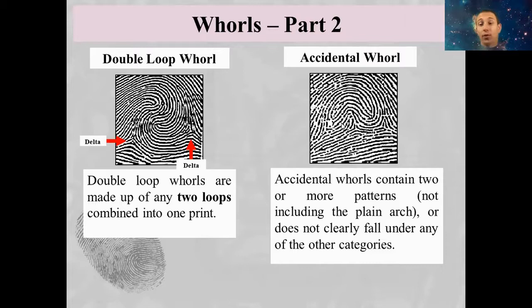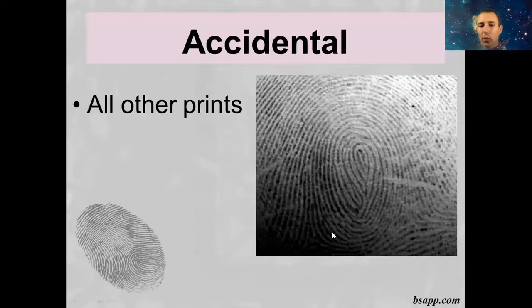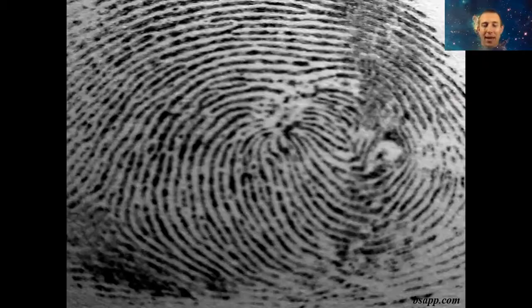If something doesn't fit into any other categories, that's going to be what we call an accidental. For a double loop, you've got a core here and a core here — pretty easy to see. Accidentals are kind of just a hodgepodge: we've got a delta here, a delta here, and just this central section in the middle. Here's another picture of an accidental — it's very difficult to see any of those deltas or cores. It's just kind of a mess, so that's going to be an accidental.